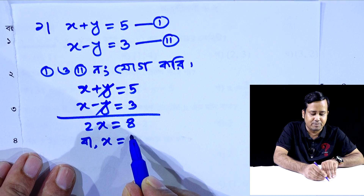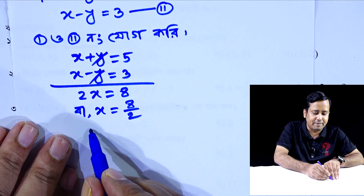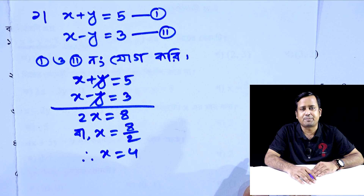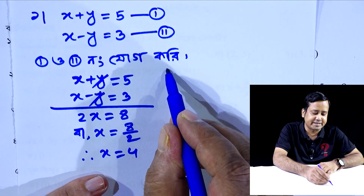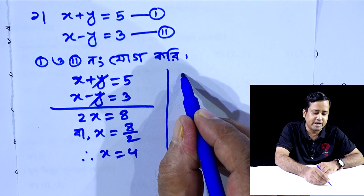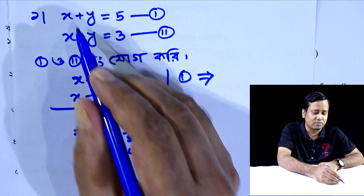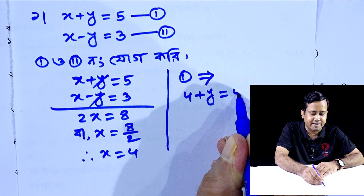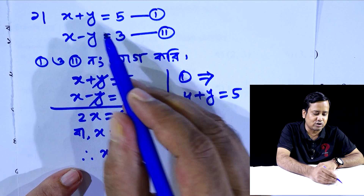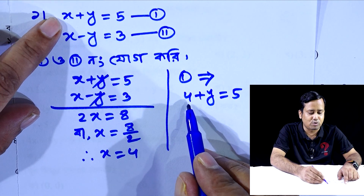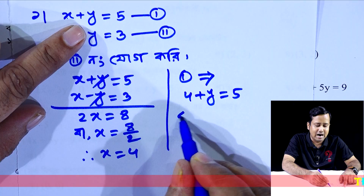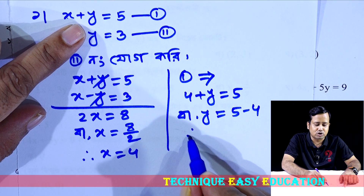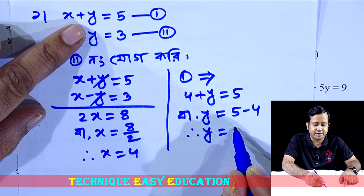x equals 4. x is 4, y equals 5. So x is 4, so y equals 5. 2y equals 5 minus 4, and y equals 1.